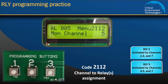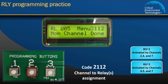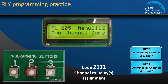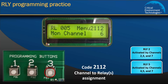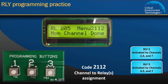By factory default, the display should show Relay 5, Channel 5. We want Relay 5 to be activated by Channels 4, 5, and 7. Press programming button 1 to decrease the Mon Channel number to 4 and press 2 to save. The display will show "Mon Channel done." Press 3 to increase the Mon Channel number to 5 and press 2 to save. The display will show "Mon Channel done." Press 3 to increase the Mon Channel number to 6, then 7, and press 2 to save. The display will show "Mon Channel done." Now we have assigned Channels 4, 5, and 7 to Relay 5.